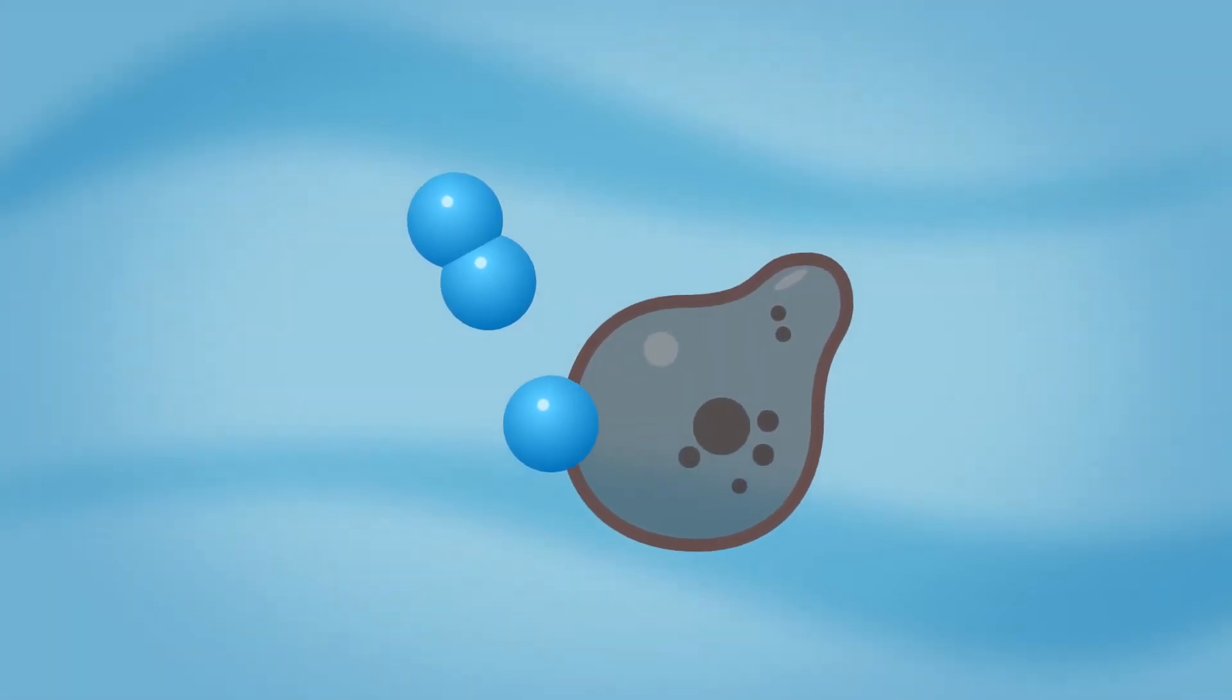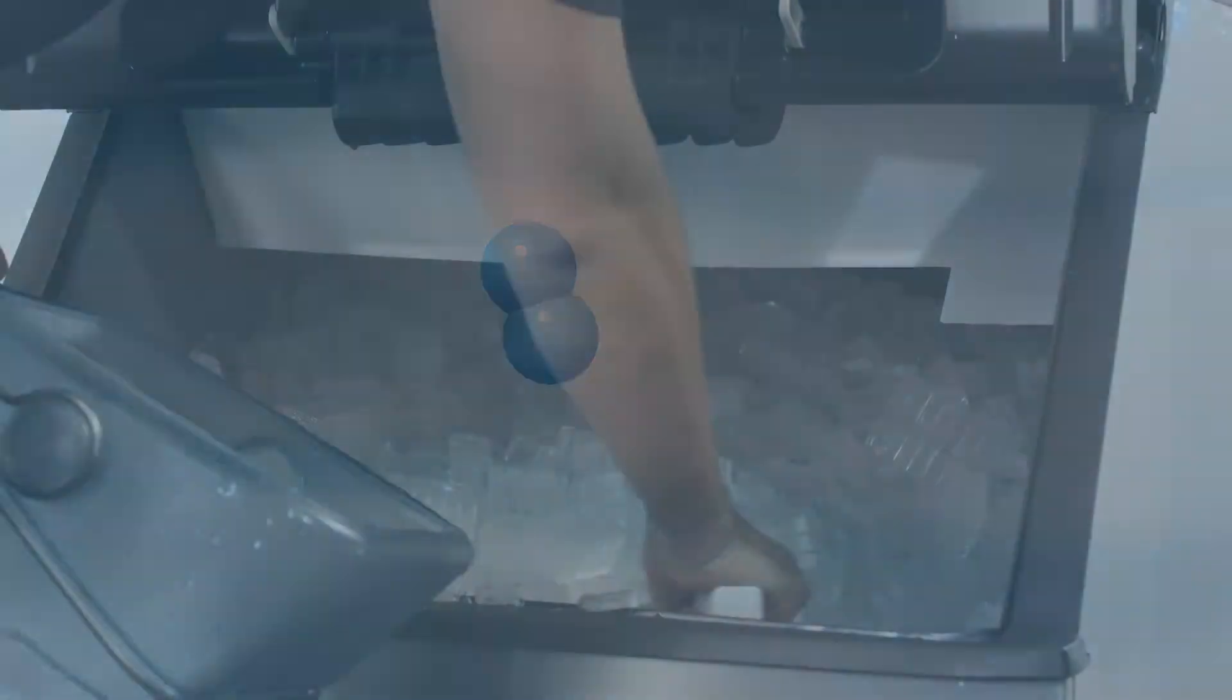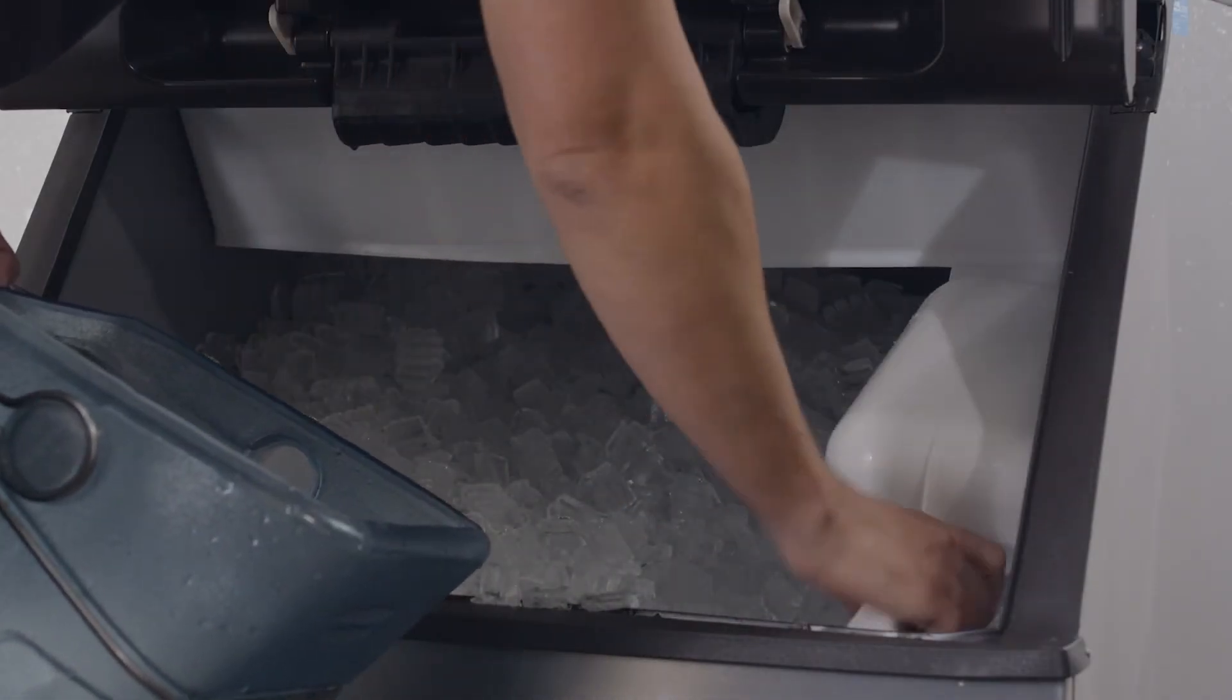This means that any unused ozone naturally breaks down to oxygen, leaving your ice machine clean and your ice free of any chemical off flavors. All of this leads to lower operating costs and less maintenance for your ice maker and cleaner, healthier ice for you and your customers.